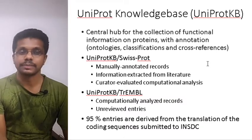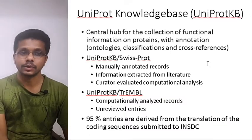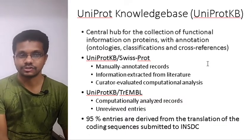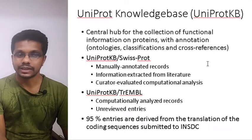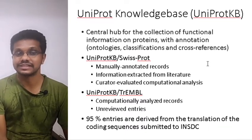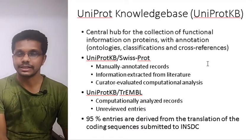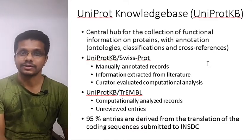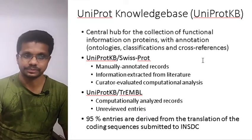UniProt KB has two sections. UniProt KB SwissProt contains manually annotated records and is essentially a primary database. UniProt KB TrEMBL is a computationally generated secondary database. Notably, 95% of entries in UniProt KB originate from machine translation, which is secondary in nature.